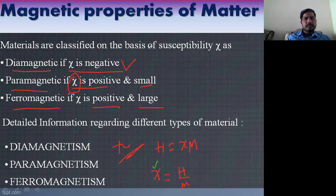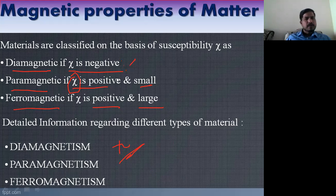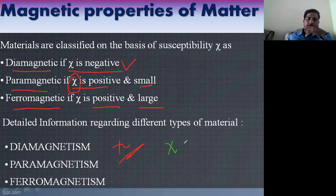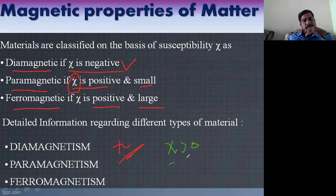Let me correct that equation. Chi is proportional to magnetization M, so chi = M/H. If chi is greater than zero, the magnetization is high.